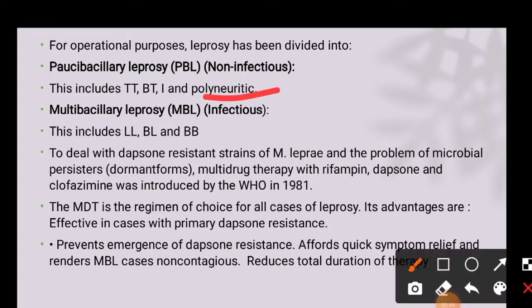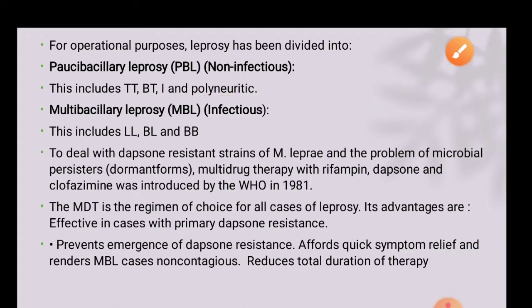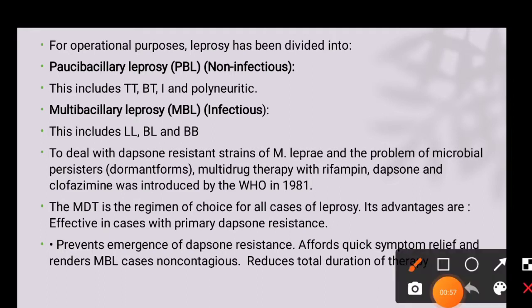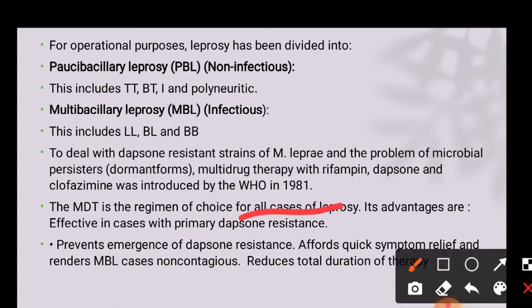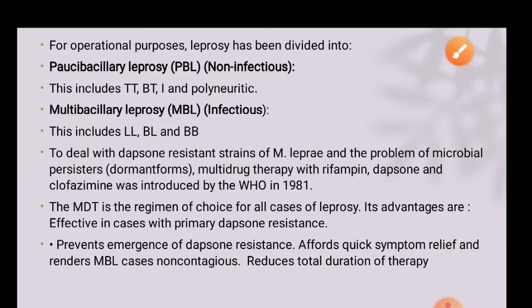In polyneuritic leprosy, the causative organism severely damages the skin and bone of the individual. This multi-drug therapy was started by the WHO in 1981 using drugs like rifampicin, dapsone, and clofazimine. The main idea was to prevent dapsone resistance, providing resistance of dapsone to the microorganism.